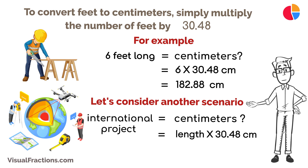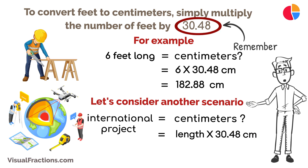And there you have it. Converting feet to centimeters is a simple process. Remember, one foot equals 30.48 centimeters. With a bit of practice, you'll become skilled at making this conversion, allowing you to work with length measurements more effectively in both imperial and metric systems.